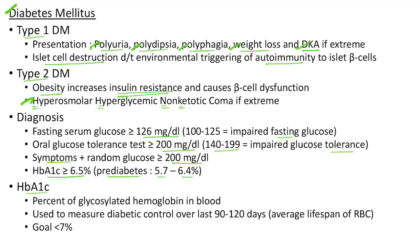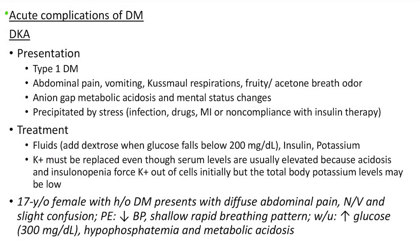HbA1C is the percent of glycosylated hemoglobin in blood. It is used to measure diabetic control over the last 90 to 120 days, which is the average lifespan of RBCs. The goal of HbA1C in diabetic patients should be less than 7%. Diabetic ketoacidosis is seen in uncontrolled type 1 DM. Clinical features include abdominal pain, vomiting, Kussmaul respirations and fruity or acetone breath odor. There will be high anion gap metabolic acidosis and mental status changes. DKA is precipitated by stress — infection, drugs, myocardial infarction or non-compliance with insulin therapy.